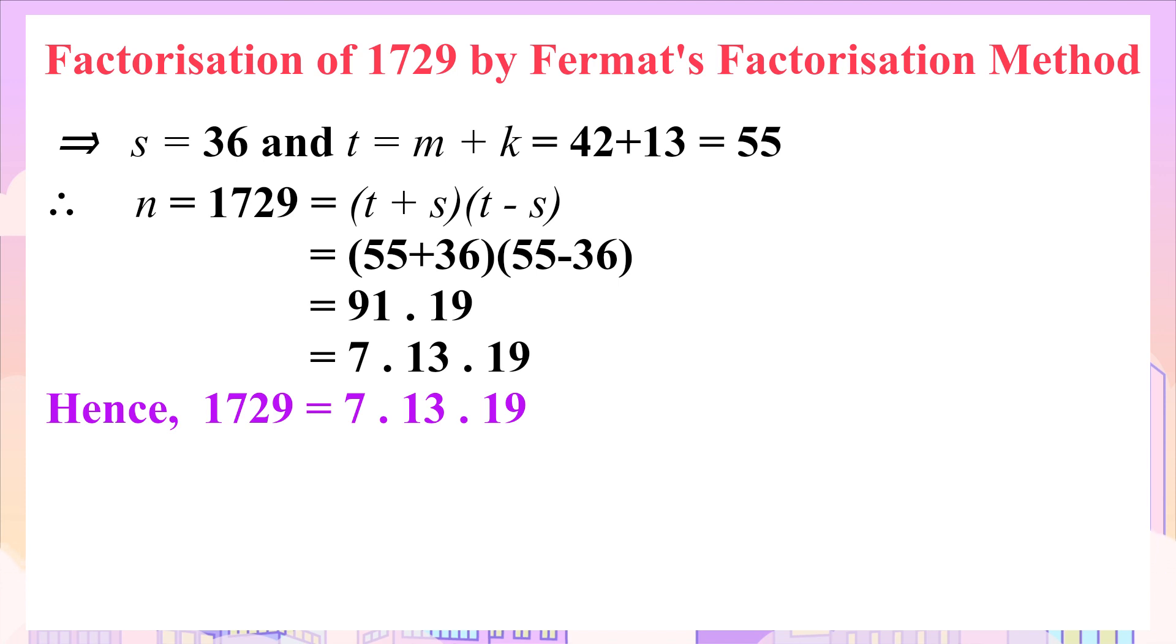On further factorizing 91, we have 1729 is equal to 7 times 13 times 19, which is the required factorization as all the three factors are prime. There is another example on Fermat's factorization method in one of my uploads. You can check that out. The link of the video is in the description.